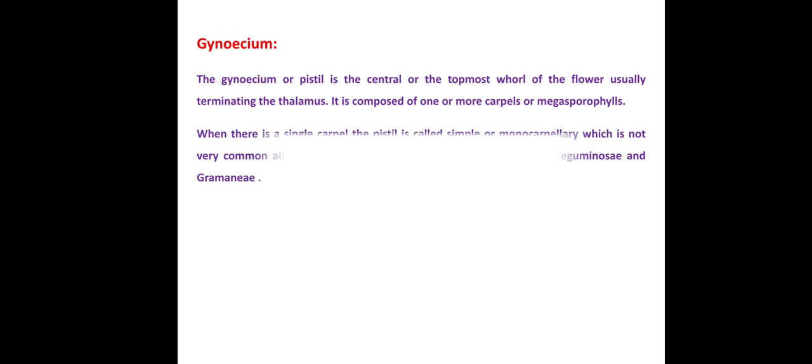When there is a single carpel, the pistil is called simple or monocarpellary, which is not very common, although it is a characteristic of large families such as Leguminosae and Gramineae members.